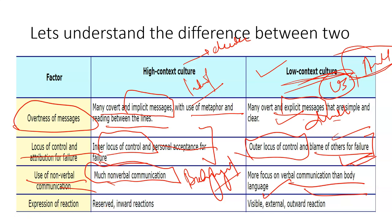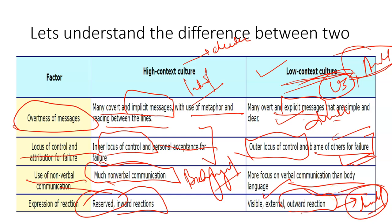The fourth difference is expression of reaction. In high context cultures, there is a reserved or inward reaction — this is what people in Asian countries tend to do. On the other side, in low context cultures, there is an outward reaction. If something doesn't feel right, people will immediately react without thinking about consequences. In high context cultures, people do not react immediately in this way.